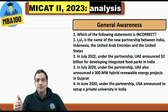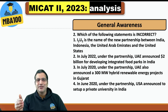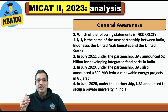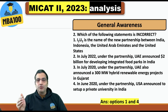Which of the following statements is incorrect? I2U2 is the name of a new partnership between India and Indonesia — that is where you could get the answer, because it is not Indonesia, it is Israel. The partnership is India, Israel, UAE, and USA — I2U2. The answer is options 1 and 4; these two statements are incorrect.